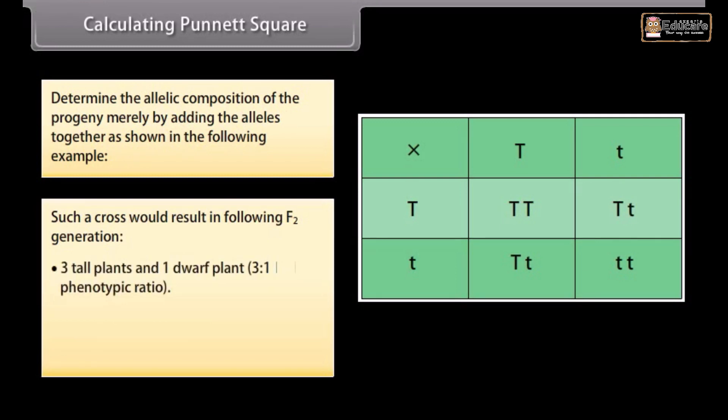Three tall plants and one dwarf plant, 3:1 phenotypic ratio. One homozygous tall, two heterozygous tall, and one homozygous dwarf plant, 1:2:1 genotypic ratio.